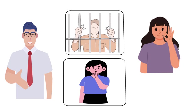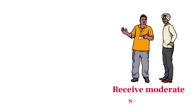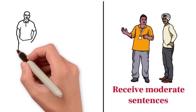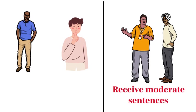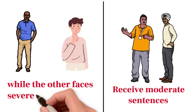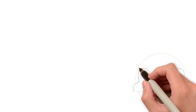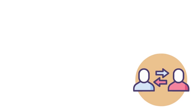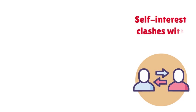If both remain silent, they'll face minor charges. If both confess, they'll receive moderate sentences. But if one confesses and the other remains silent, the confessor walks free while the other faces severe consequences. This paradox vividly portrays how self-interest clashes with cooperation.